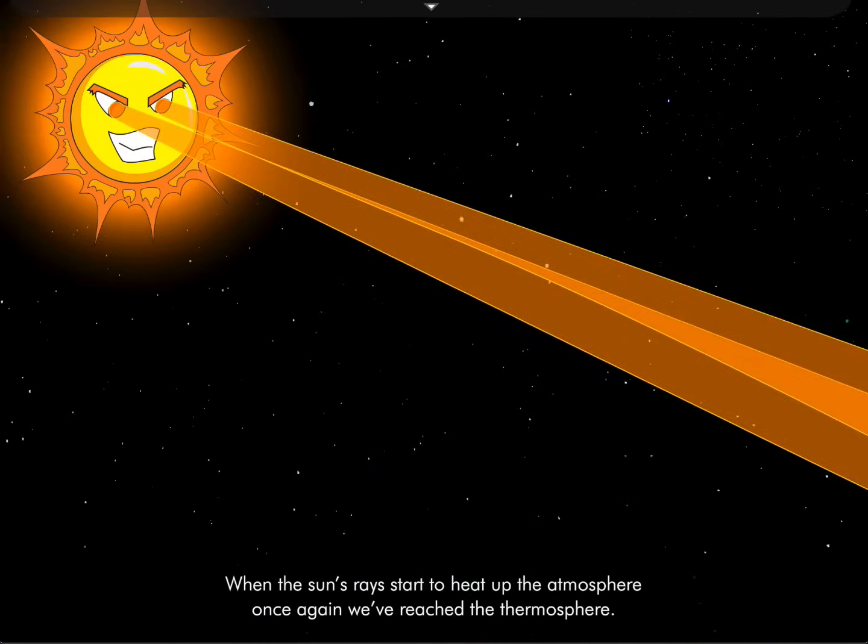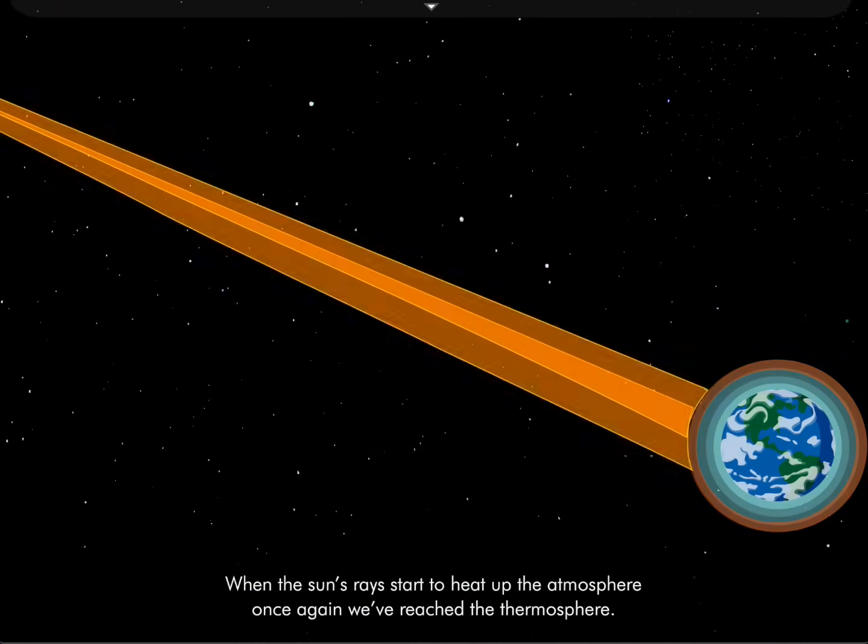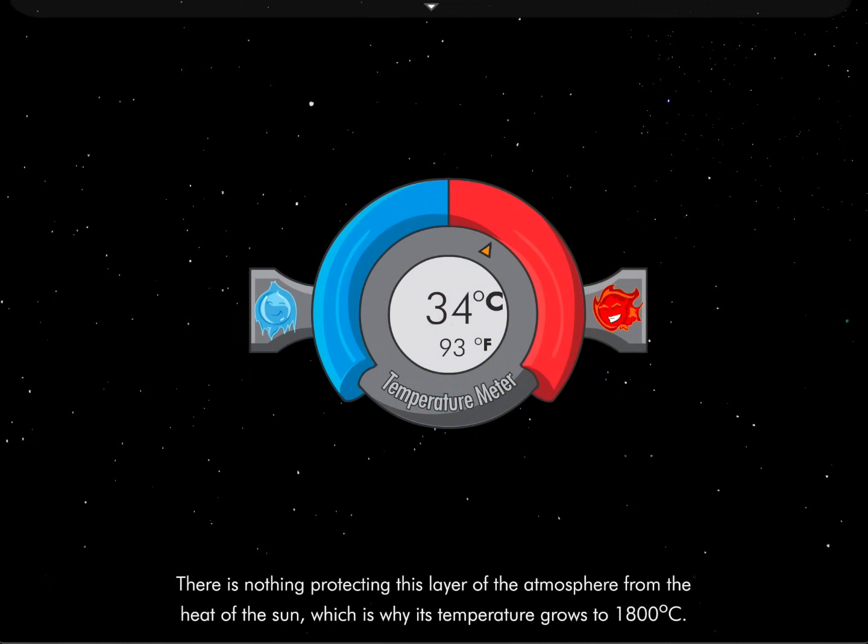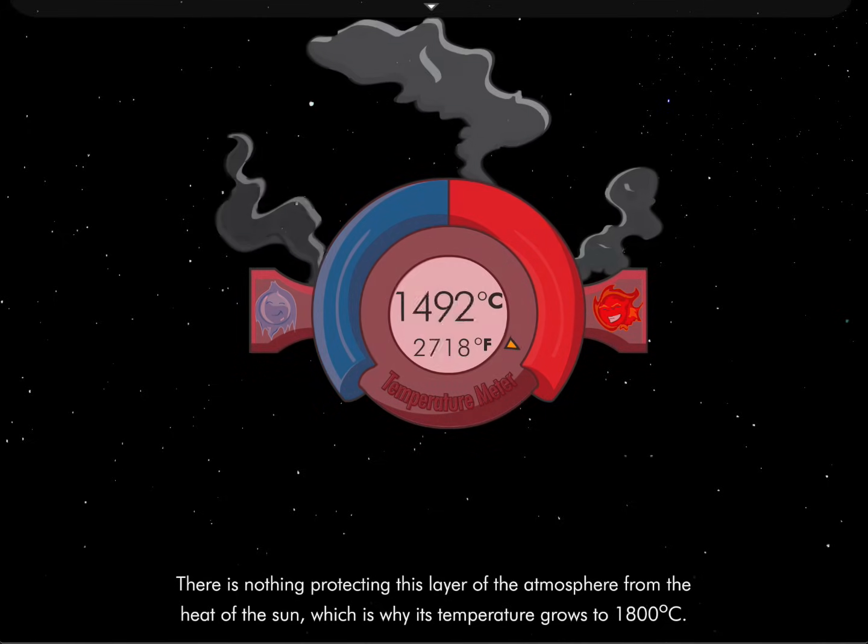When the sun's rays start to heat up the atmosphere once again, we've reached the thermosphere. There is nothing protecting this layer of the atmosphere from the heat of the sun. That's why its temperature heats up to 1800 degrees Celsius.